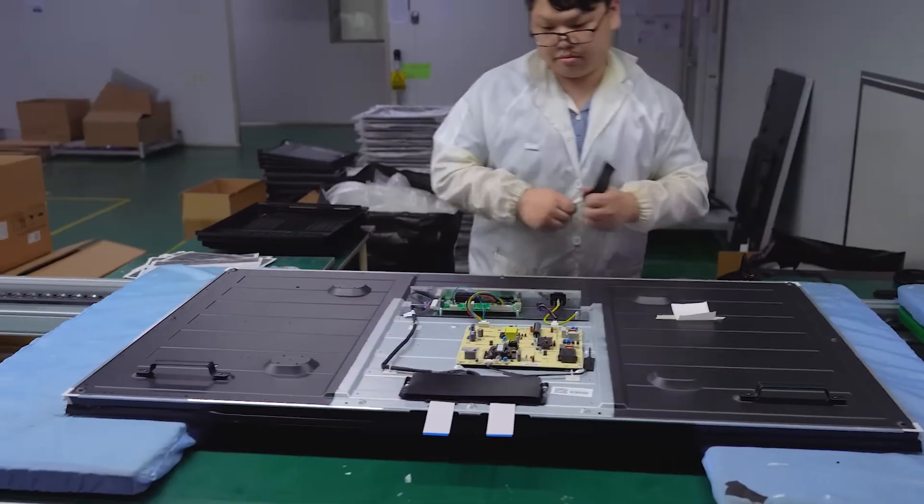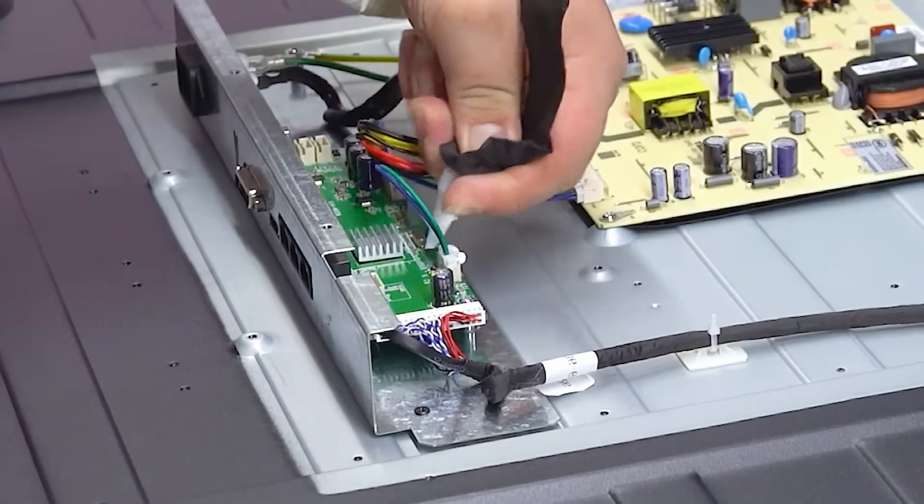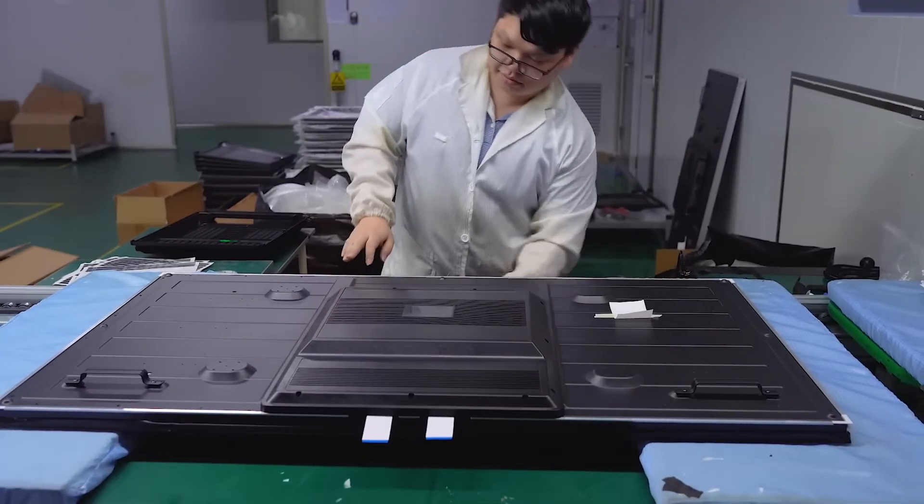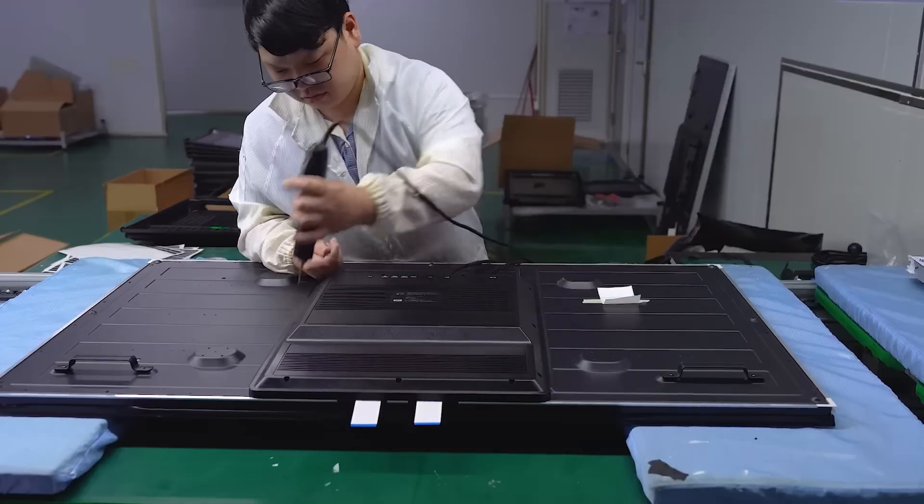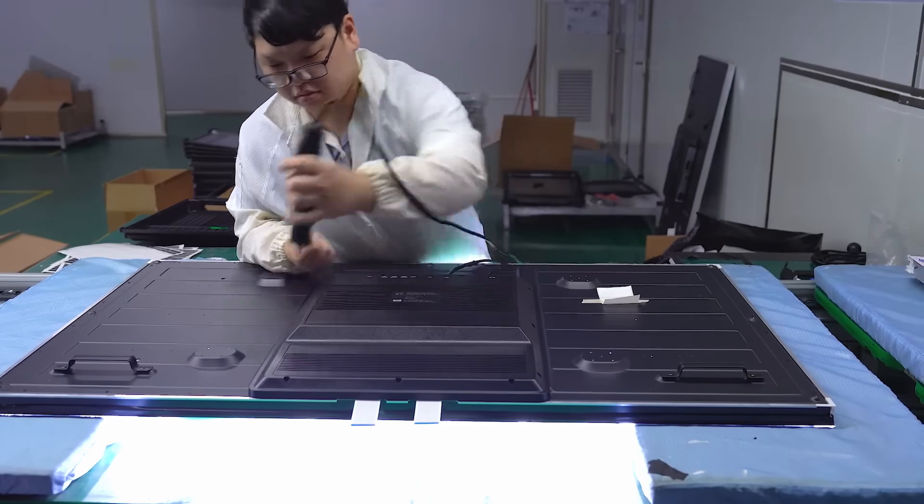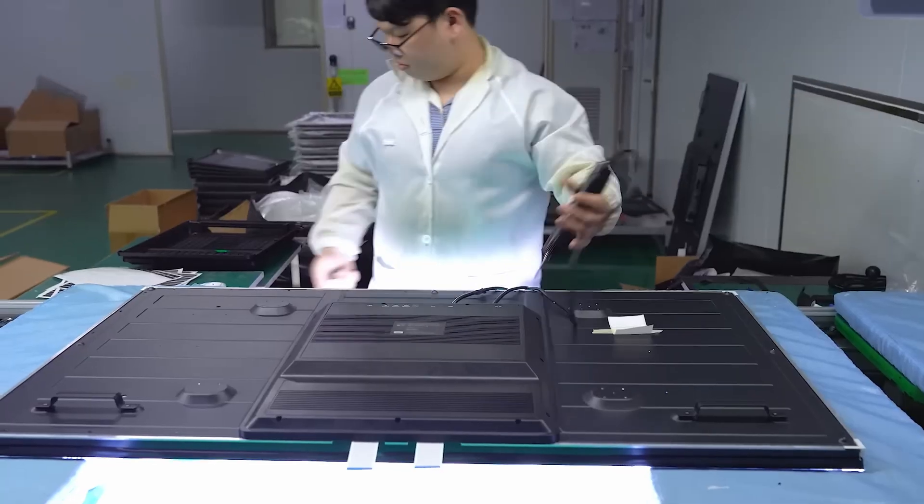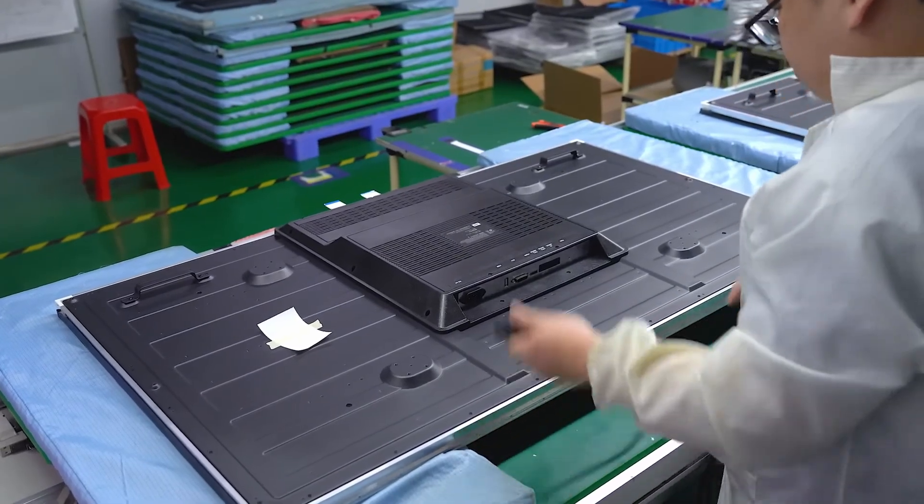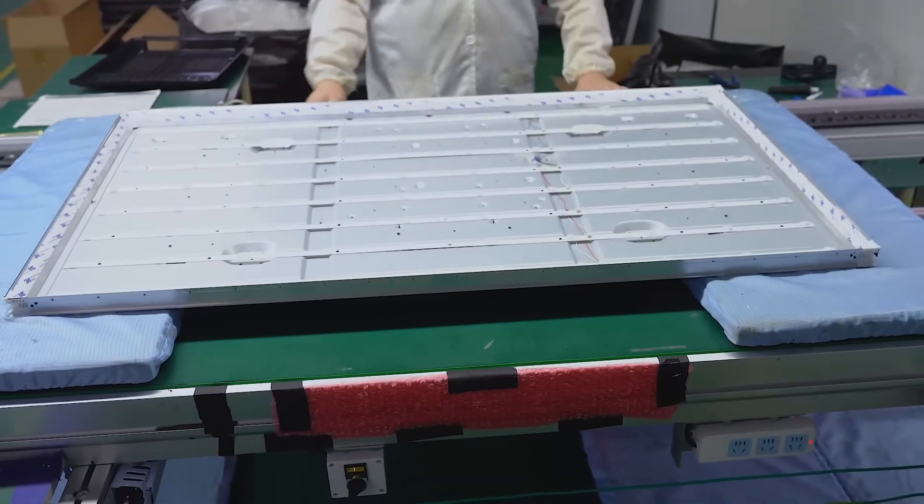One of the most crucial components in this process is the Timing Controller, or T-Con board. This small but powerful board is responsible for controlling the timing of signals sent to the display. It ensures that each pixel on the screen lights up at precisely the right moment, preventing issues like screen tearing or image lag. The T-Con board communicates directly with the LCD panel, making it an essential link between the video processing unit and the display itself.